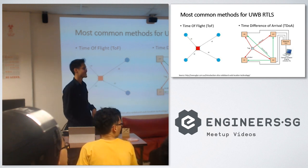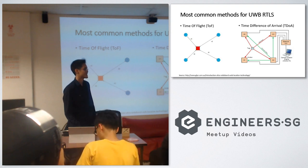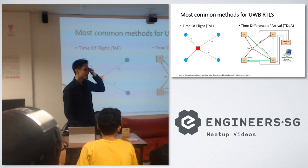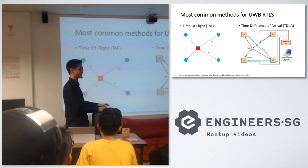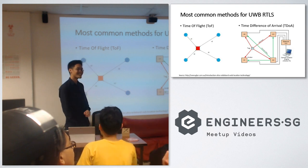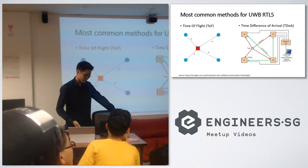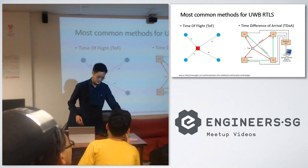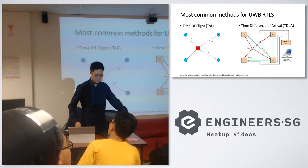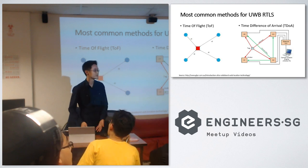Question: In your development, what kind of test and measurement instruments have you used? Answer: This is a hobby, so I'm just exploring. What I did was use a one-meter ruler — I placed one anchor and one tag, moved it 10 cm, and saw the difference on the screen change by 10 cm. It was very good.